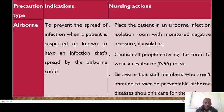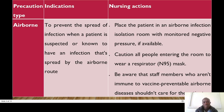Now let's look at airborne precautions. These are meant to prevent the spread of infection from a person who is suspected or known to have an infection that is spread by airborne routes. As an RN, for a patient with suspected airborne infection, you need to place that patient in an airborne infection prevention isolation room that is monitored by negative pressure, if available.